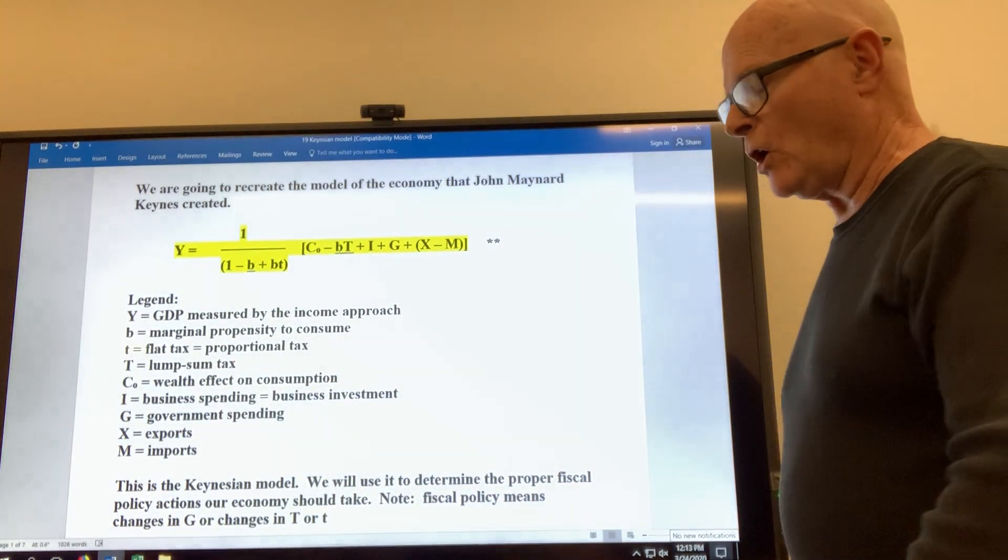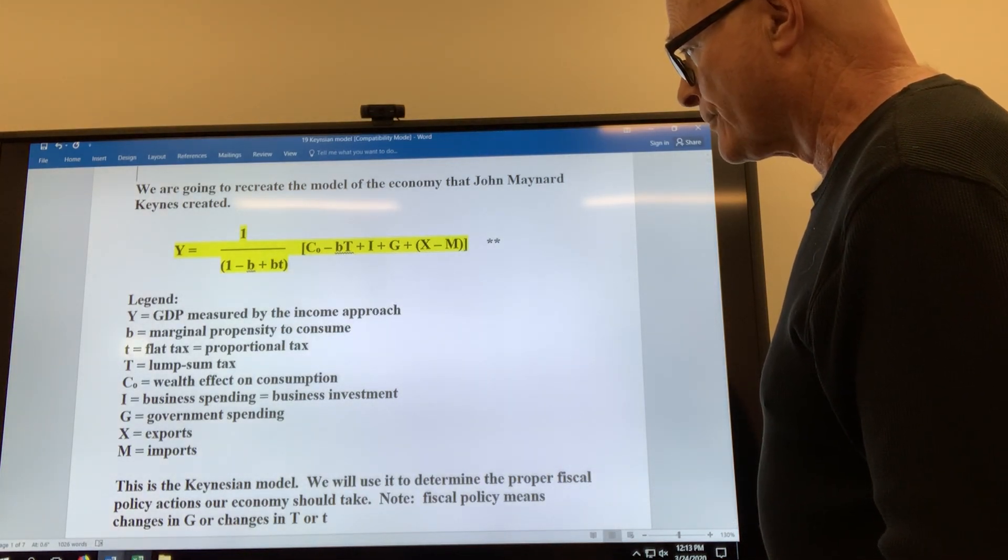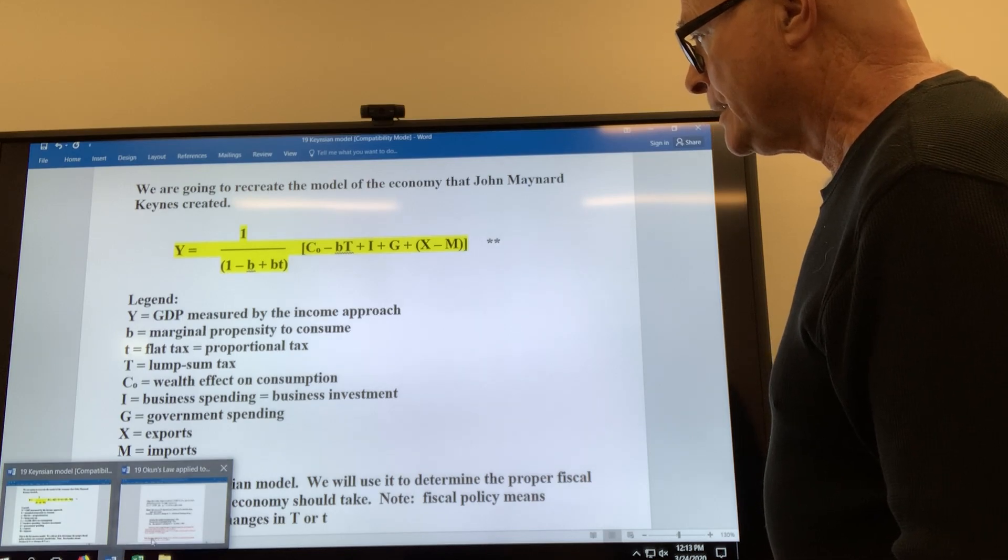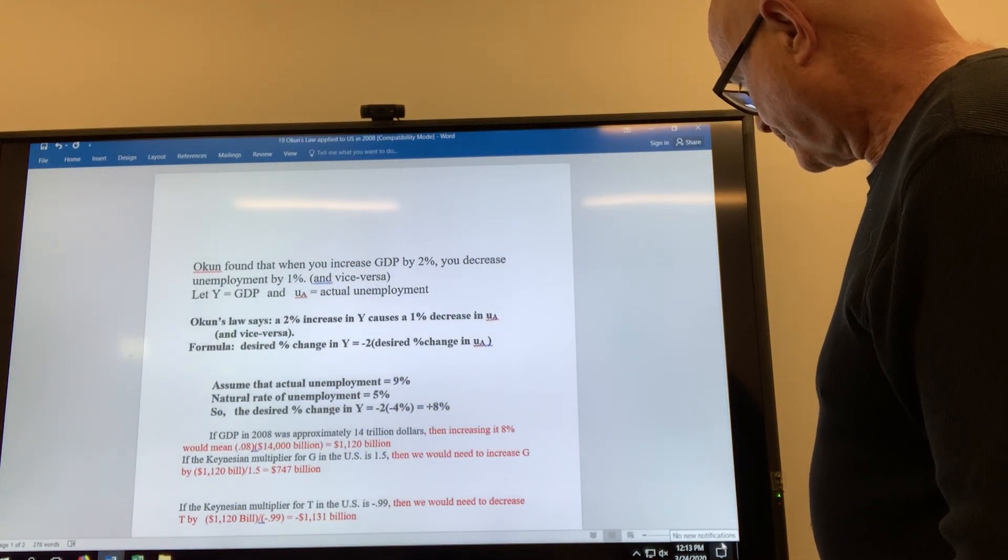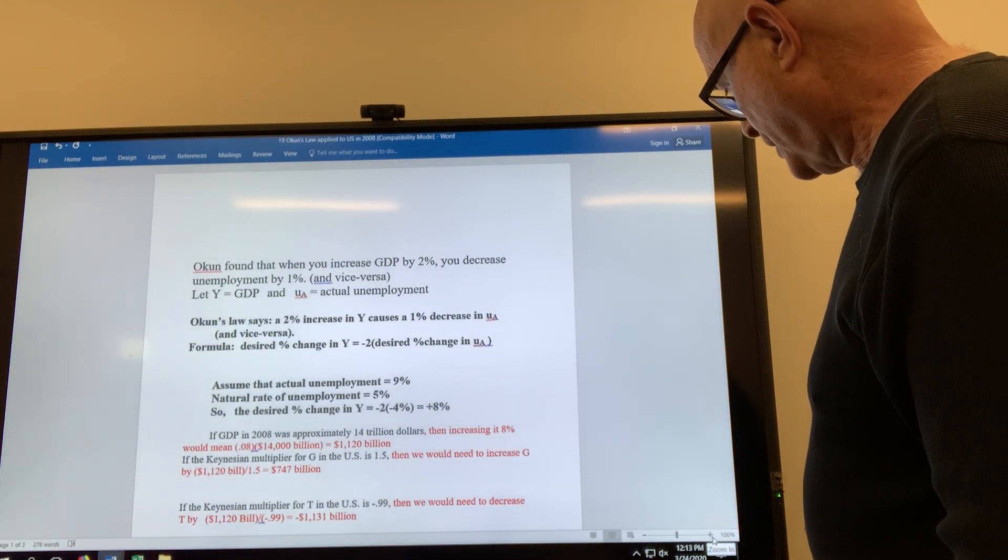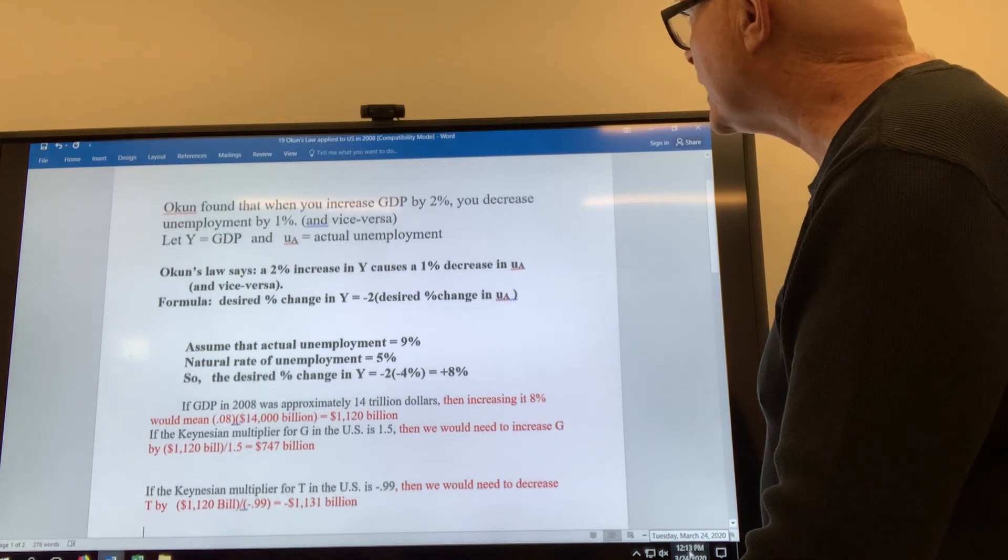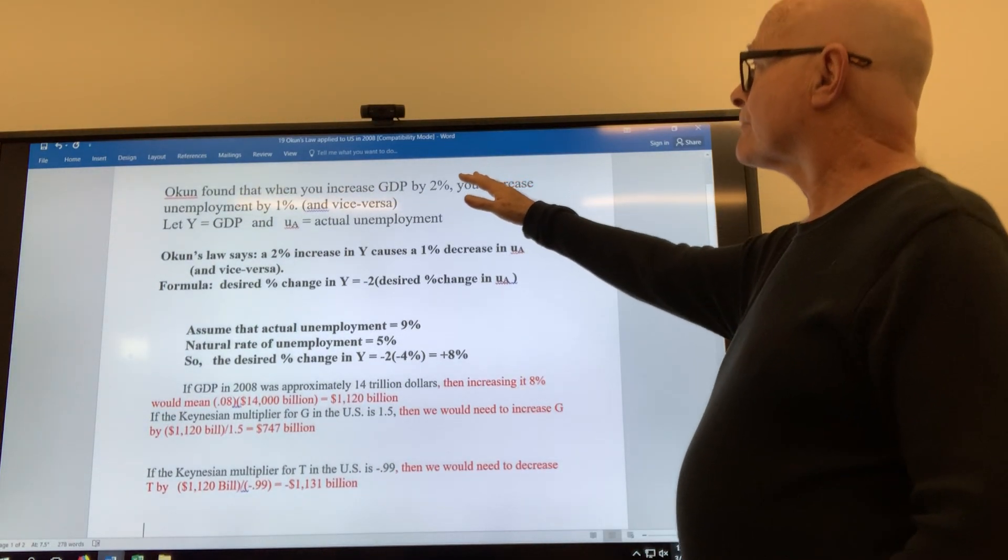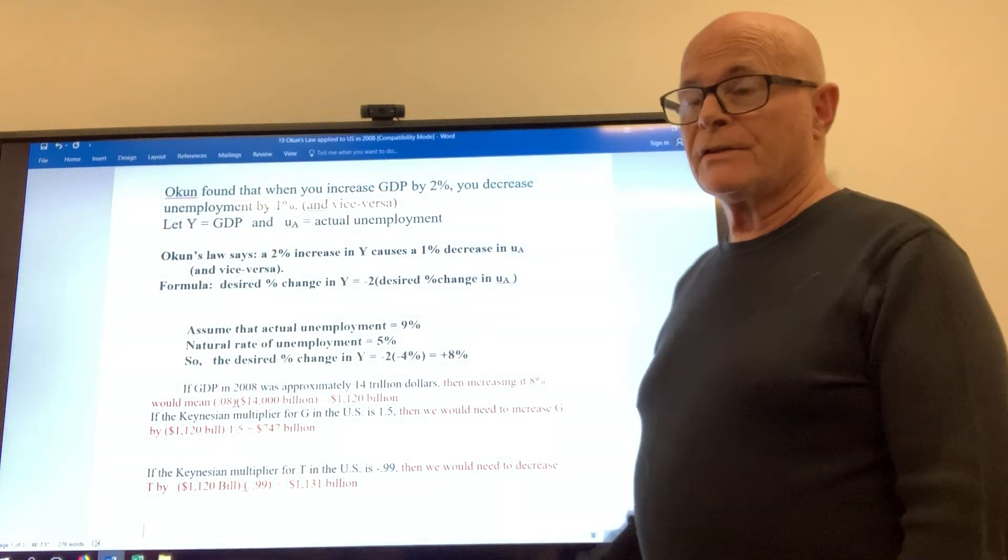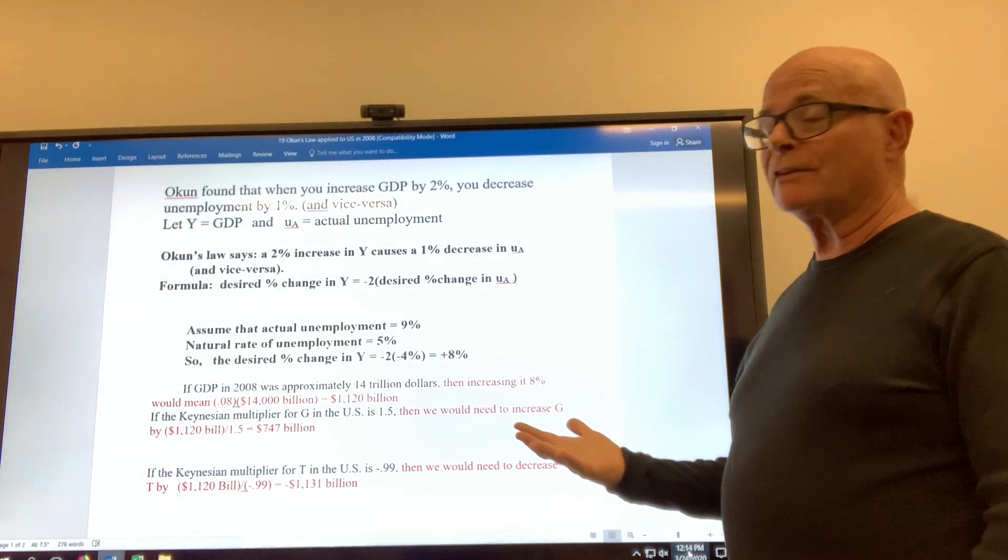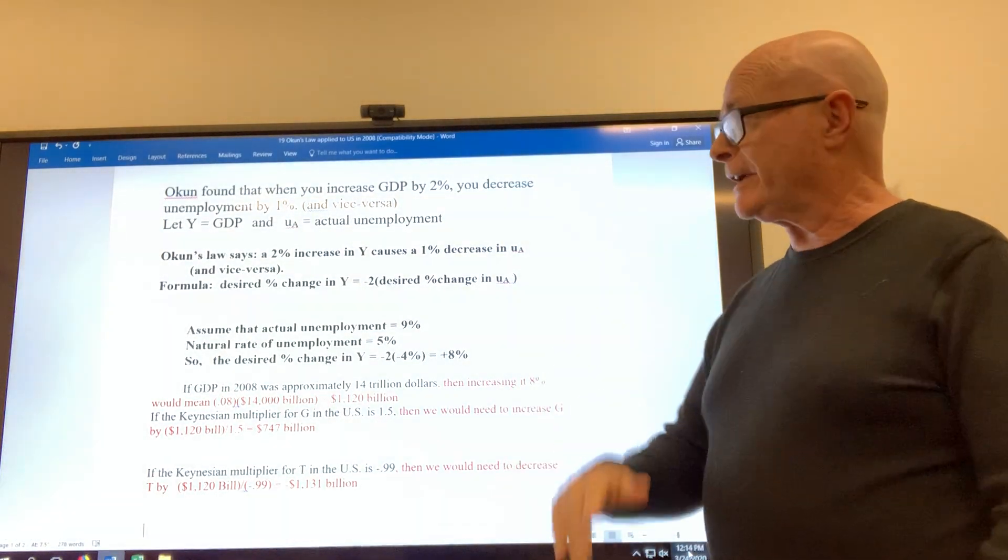We have this other fellow who came along, lucky for us. His name was Arthur Okun, and he found out that if you increase GDP by a certain percentage, namely exactly two percent, you'll decrease the unemployment by one percent. So that tells you exactly how many dollars you need to spend, how much you need to increase GDP to get rid of the amount of unemployment you might have.